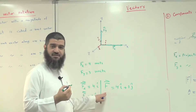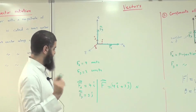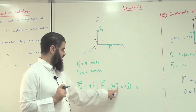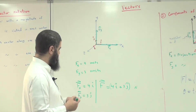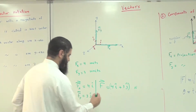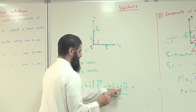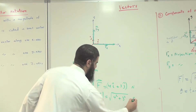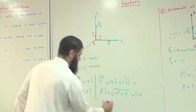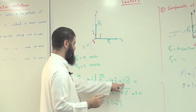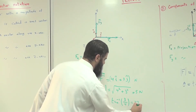If we want to find the magnitude of this vector, the magnitude of F equals the square root of the x-component squared plus the y-component squared — that is, the square root of four squared plus three squared — which gives five newtons. And the angle theta it makes with the positive x-axis counterclockwise is tan inverse of the y-component divided by the x-component, which calculates to 37 degrees.